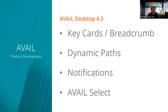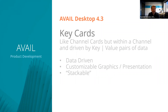We also released two new marketplace channels — what we call Avail Select — which is our first foray into manufacturer content. We did a webinar a couple of weeks ago where we ran through that with customers. If you are an enterprise customer of Avail, you should be able to go to the marketplace and find those Avail Select channels and turn them on.